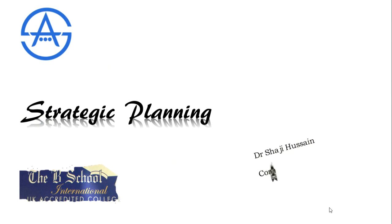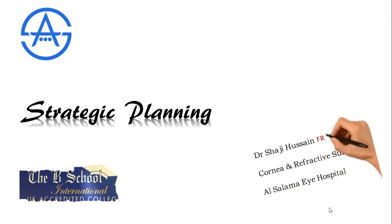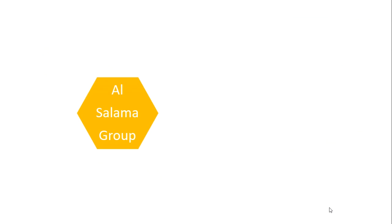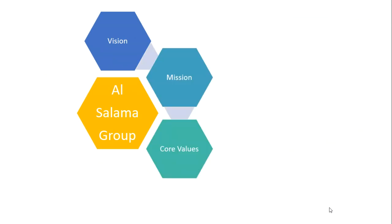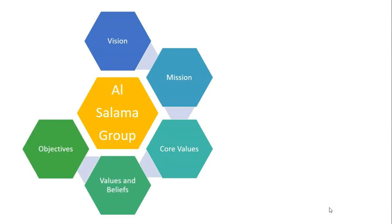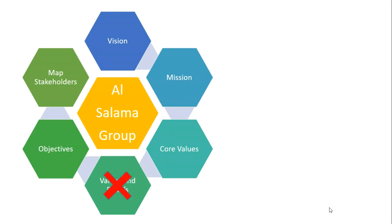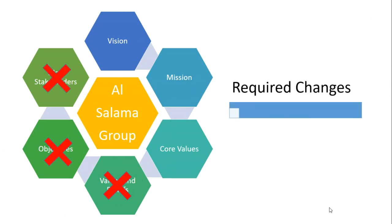To start with strategic planning — from classes taken by B-school along with my hospital — we have to go about with strategic planning. As a link in a corporate group, we have to set our mission, core values, values and benefits, objectives, and map the stakeholders. We have to set our mission and core values, and set our website as well as our documents. That is the first step of strategic planning.